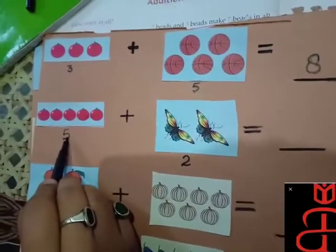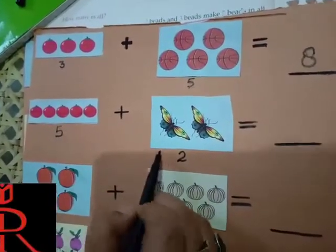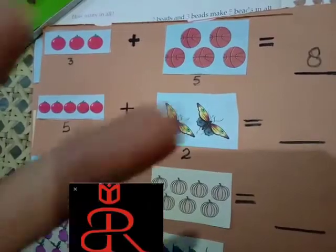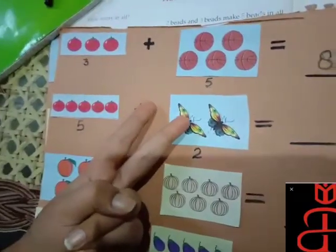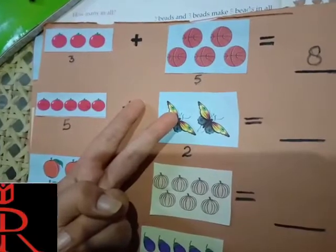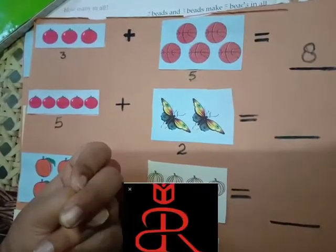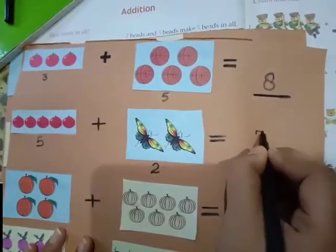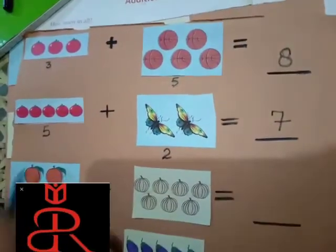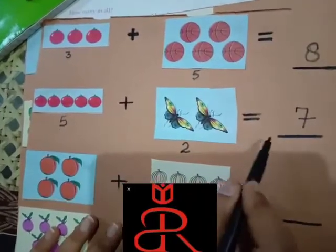Put five on our head and two on fingers. Five on head and two on fingers. So, now, after five, we will start adding. Six, seven. It means the answer is seven. Five plus two is seven.